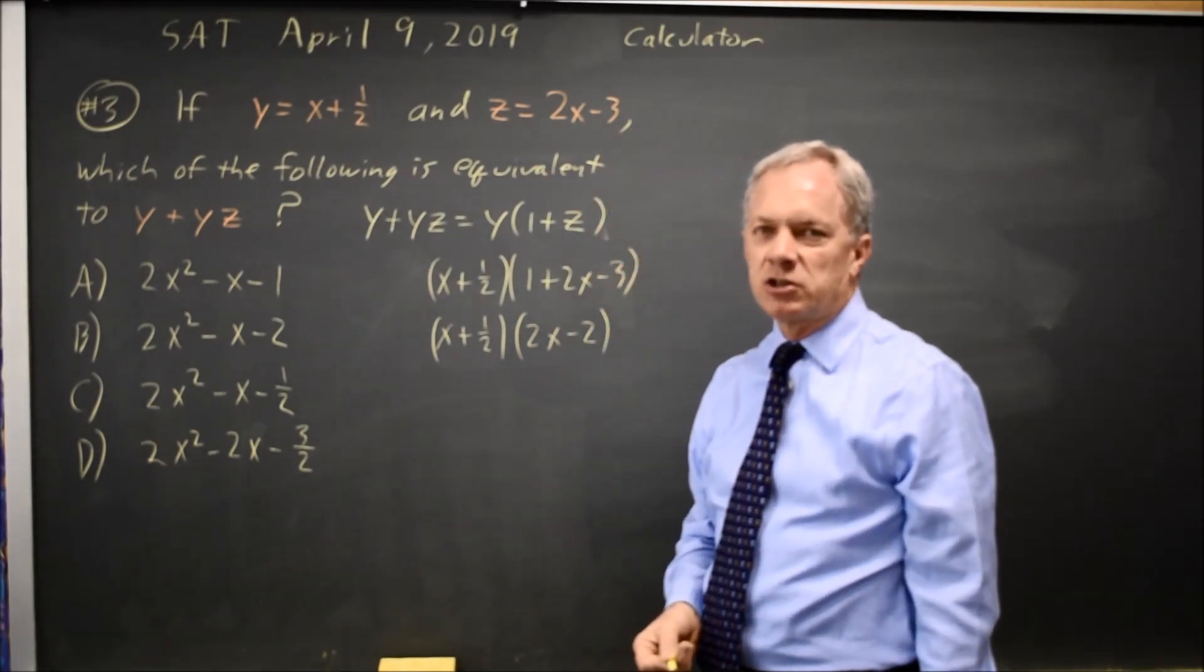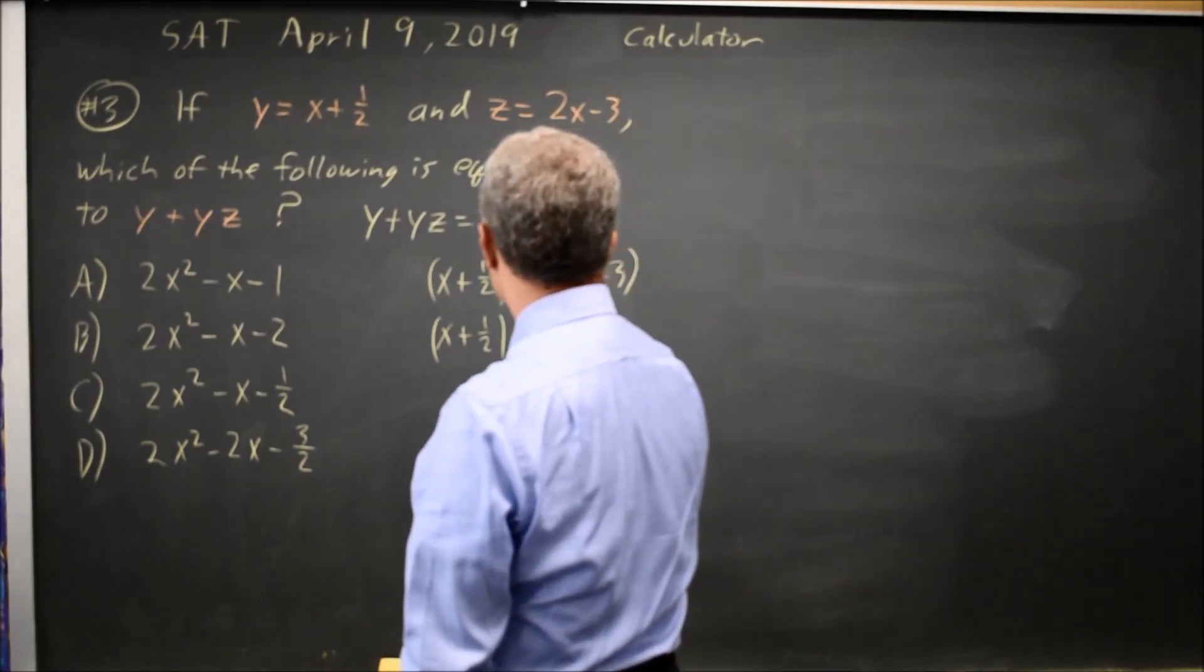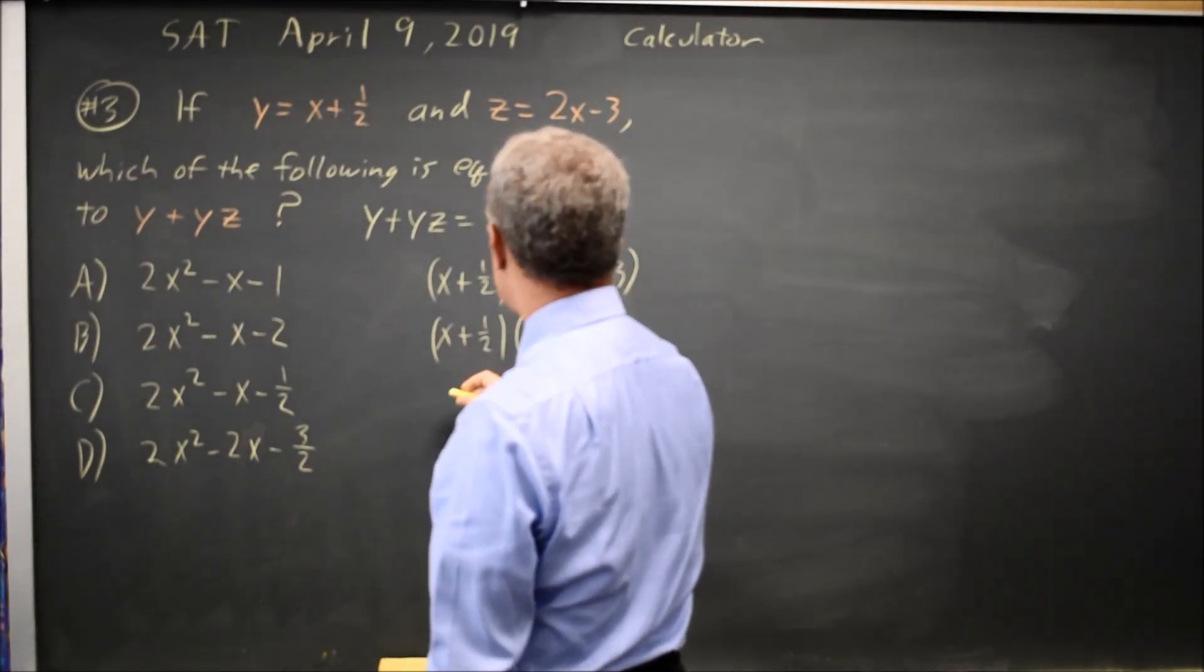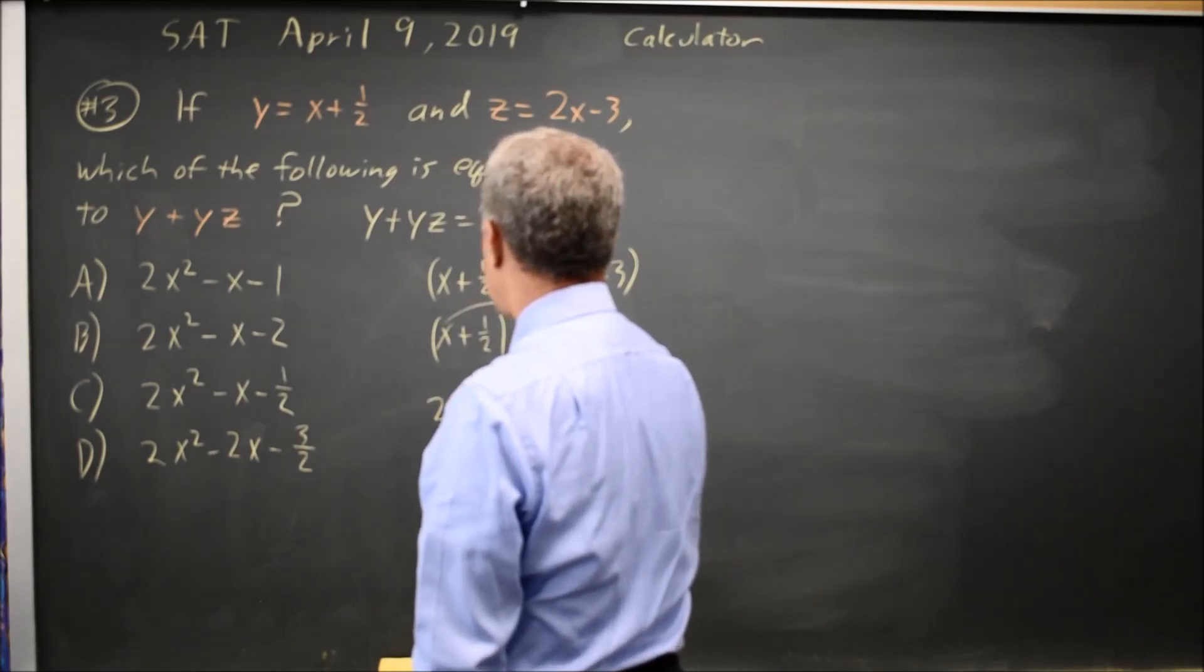There's a shortcut I'll show later but I wanted to do the algebra first. And I could do FOIL with this, I guess I will. Well, x times 2x is 2x squared.